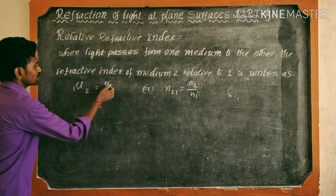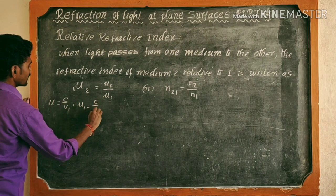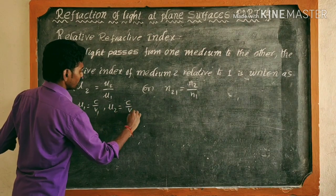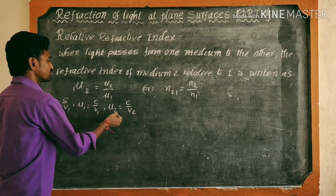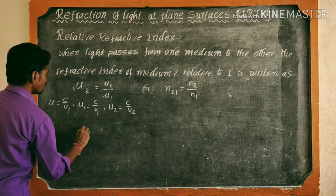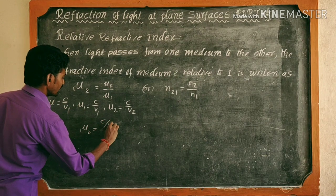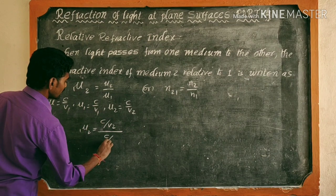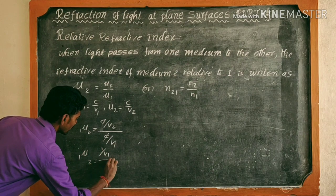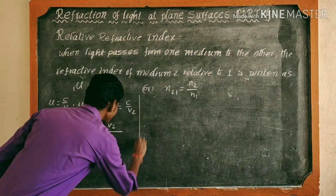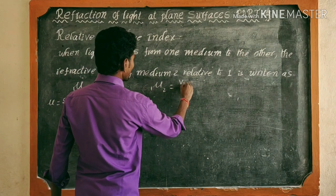So how does μ₁₂ become μ₂/μ₁? We know that μ = c/v, so μ₁ = c/v₁ and μ₂ = c/v₂, because c is constant — the speed of light in vacuum, approximately 3×10⁸ m/s — while v is the speed in the medium, which changes. Therefore, μ₁₂ = μ₂/μ₁ = (c/v₂)/(c/v₁). The c cancels, giving μ₁₂ = v₁/v₂.